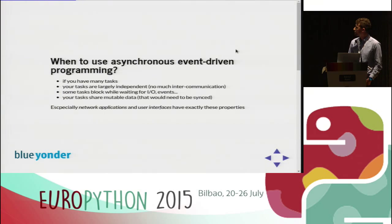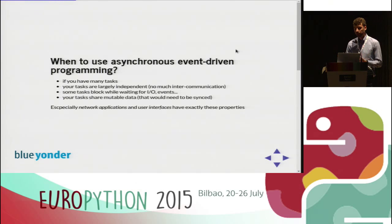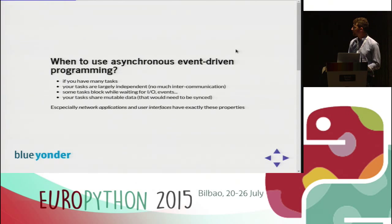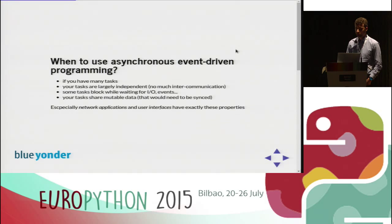When should you use asynchronous event-driven programming? When you have many tasks — at least two, otherwise it makes no sense — that are largely independent with little intercommunication. When your tasks wait on I/O and would normally block, and you could do other things during that time. Also when tasks share mutable data that would need to be synced in a multi-threaded approach. This is especially natural for network applications and user interfaces.